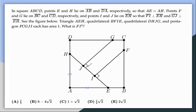We have a lot of 90s, so these are perpendicular. We're told that triangle AEH, this isosceles triangle, and quadrilateral BEIF and DHJC, and pentagon FCGJI are all equal to one in terms of their areas.